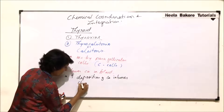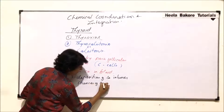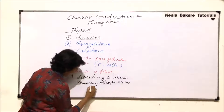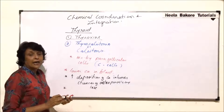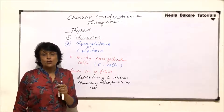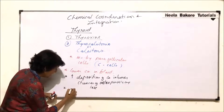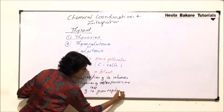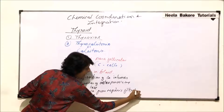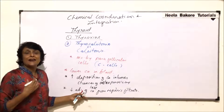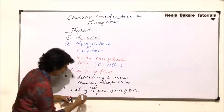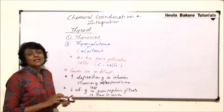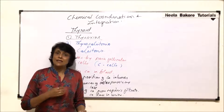Calcitonin increases deposition of calcium in bones, which lowers the chances of osteoporosis. It also decreases the absorption of calcium from the nephric filtrate, meaning that unabsorbed calcium will get eliminated in urine, resulting in calcium loss from the body.